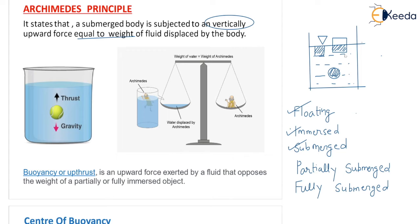What is partially submerged? If I apply a small force F in the upward direction to a submerged body, some part of the body will go outside the water — that is called partially submerged, which is the same as floating condition. And if I apply a small force in the downward direction to the submerged body, the body will go completely inside the water — that is called fully submerged, which is the same as immersed condition.